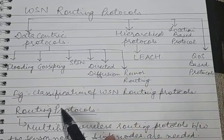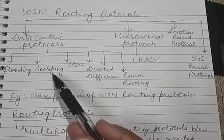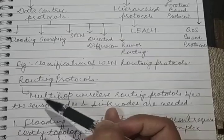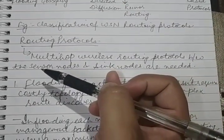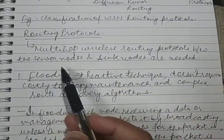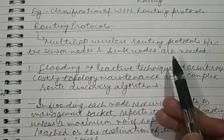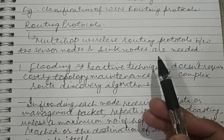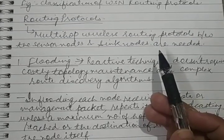In this lecture I will be talking about the data centric protocols — that means flooding, gossiping, and SPIN. Routing protocols are necessary because in wireless sensor networks, multi-hop wireless routing protocols between the sensor nodes and the sink nodes are needed. The reason is that the number of sensor nodes is very large in WSN.